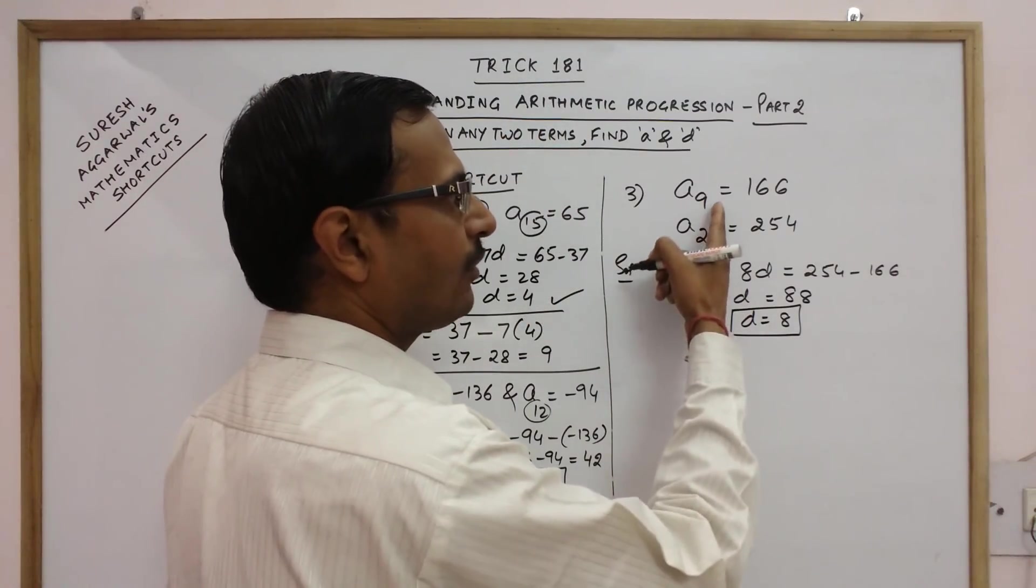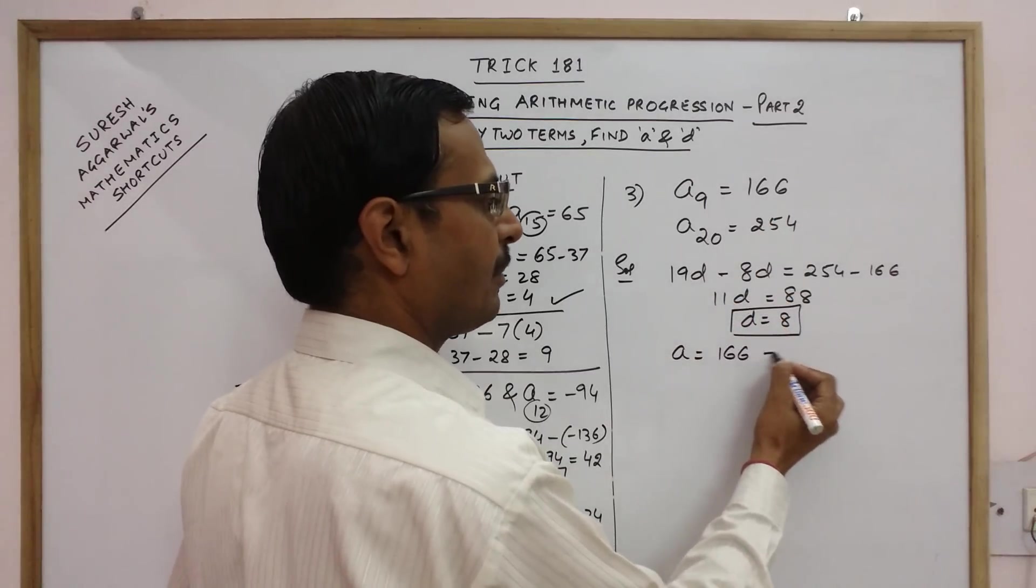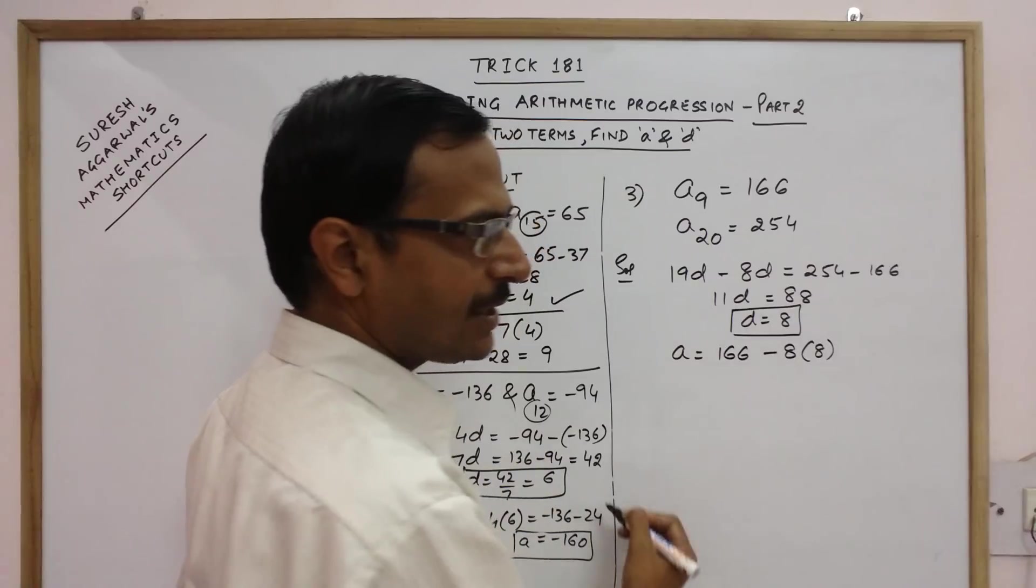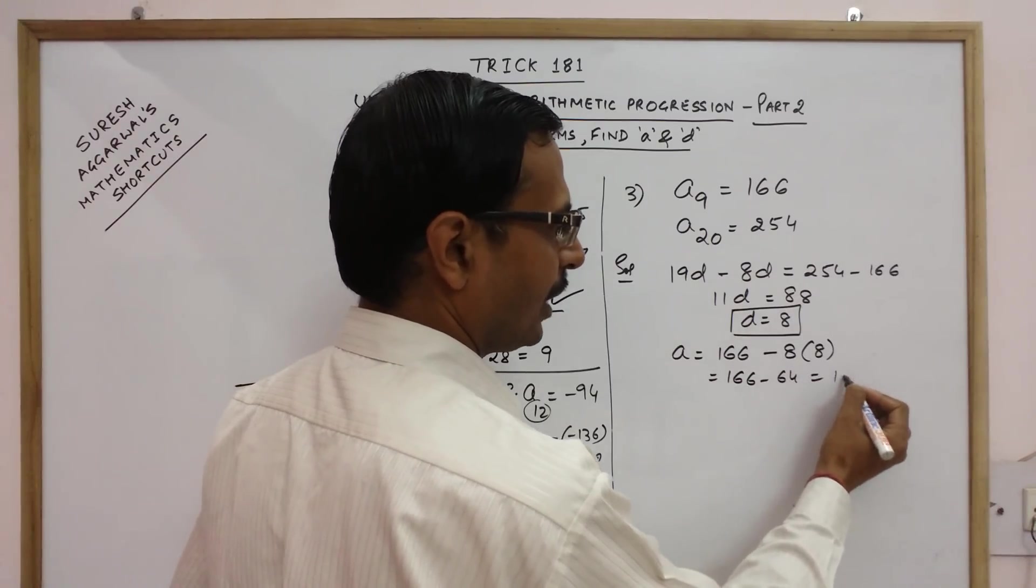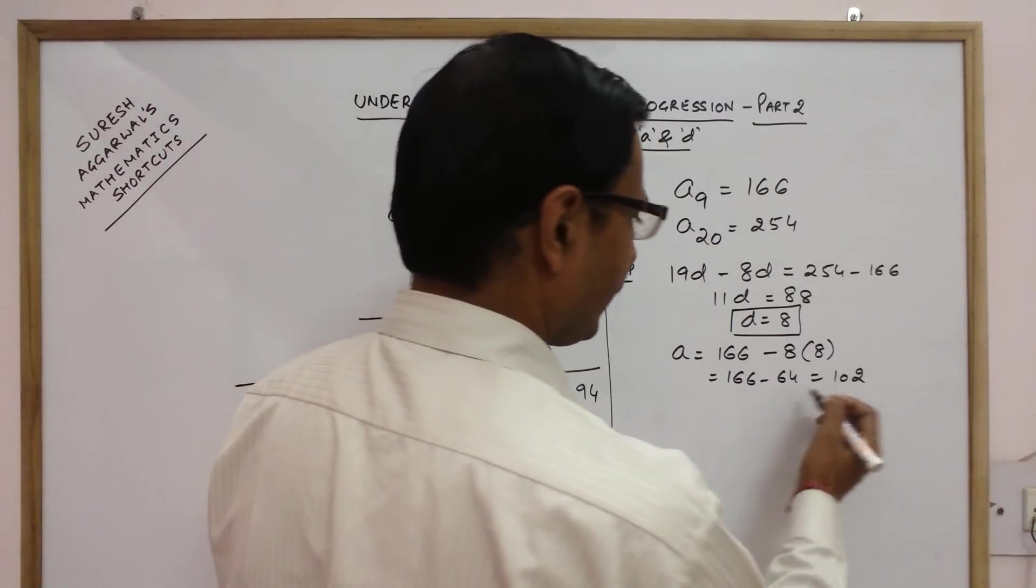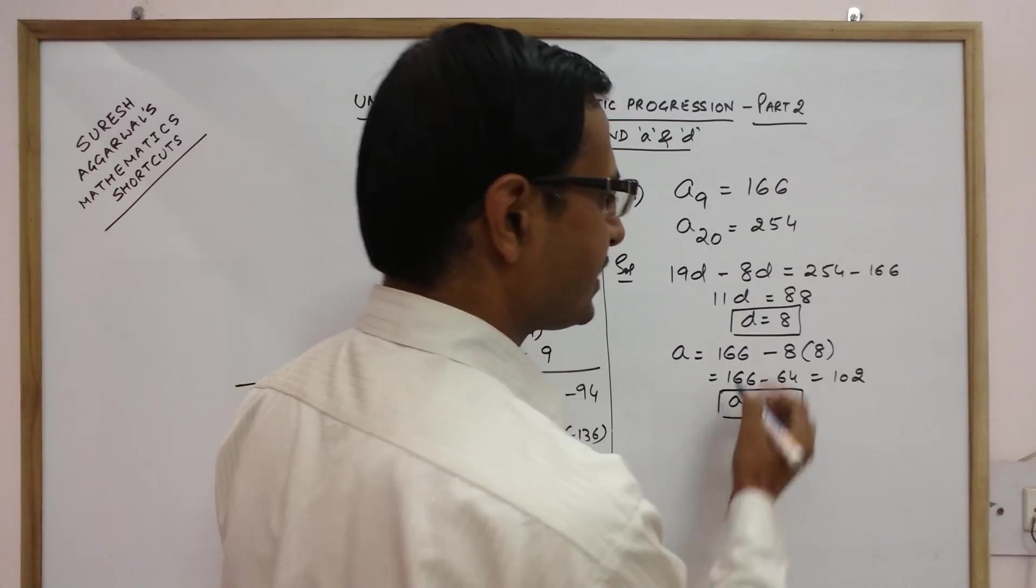Now for finding the value of A, you have 166 minus this is 9 so 8D. D is 8. So 166 minus 64, 102 is the first term. So you get the value of A as 102 and the value of D as 8.